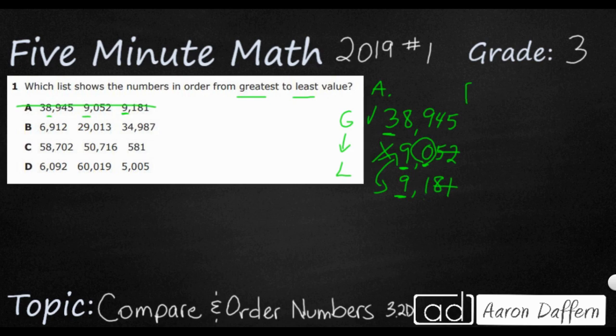Let's see what B looks like. So we've got 6,912, and we've got 29,000. Notice how that two sticks out. The two sticks out because it's in the ten thousands place. The six and the nine are both in the thousands place. And this is 34,987.